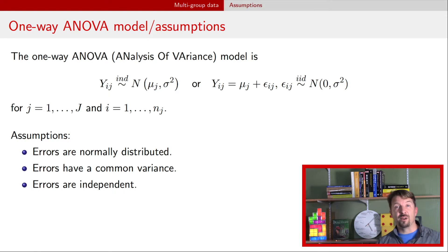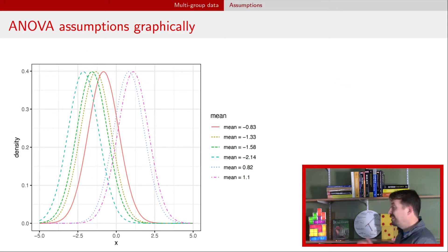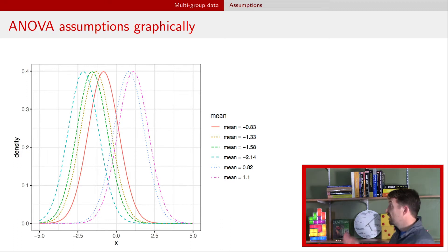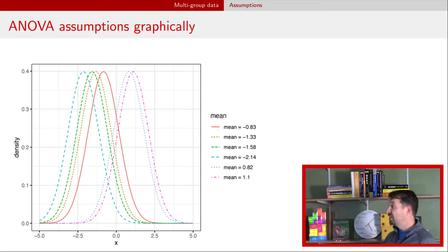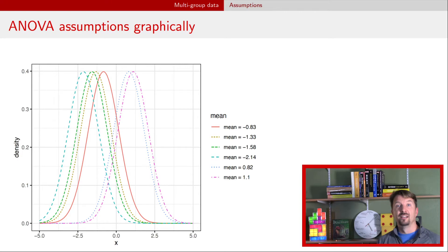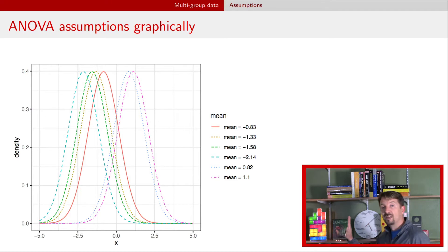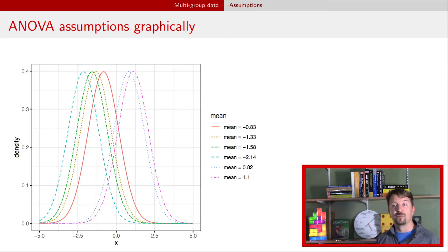Here is a graphical depiction of the ANOVA model with six different groups, each represented by different bell-shaped curves — probability density functions for six different normal distributions. The difference among them is that they just have a different mean. You'll notice that each bell-shaped curve has the same size and height because of the common variance assumption. The only thing that's different among the groups is the mean, so you shift the bell-shaped curve along the x-axis to the six different group means.